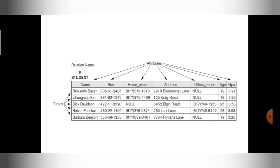Here the attributes — name, SSN, home phone, address — describe your student. So a relation in simple words is organizing your data in the form of a table, that is in the form of rows and columns. Each relation will have a name, will contain records or tuples, and will have attributes as columns.